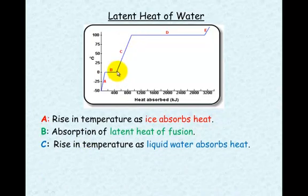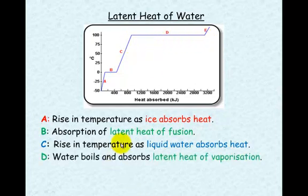Part C here is the liquid rising in temperature. Heat's being given to it and it rises in temperature until it reaches 100 degrees. Then you have this very long latent heat of vaporization. This is when the water is boiling. You can see it's from about 900 joules through to 3,100 joules.